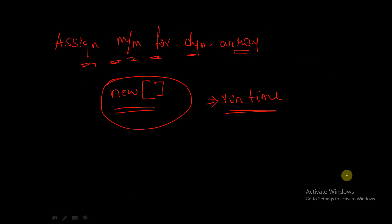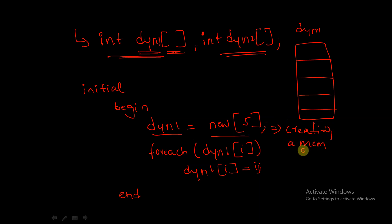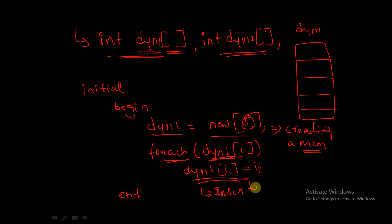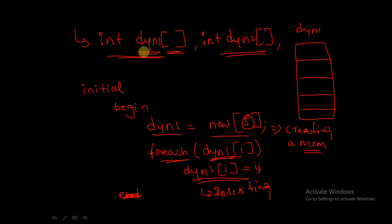So in the initial begin block: dyn1 = new[5], creating memory with five locations. Using a for-each loop, I am inserting the elements into the dynamic array. Now in the next step, I have declared two dynamic arrays — dyn1 and dyn2.